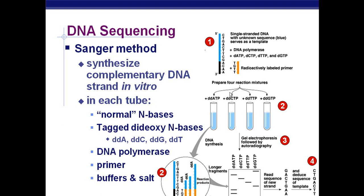These dideoxyribonucleotides are radioactively labeled. We also need a primer, which would also be radioactively labeled, some buffers and salt — those have to do with running it through the gel using our electrodes. We mix those all into the test tubes, then allow the DNA polymerase to do its job. Remember that missing extra oxygen? Wherever one of these artificial bases gets added, that's going to terminate that sequence. This happens in random locations so that overall you map out the entire gene sequence.